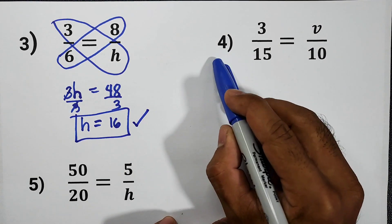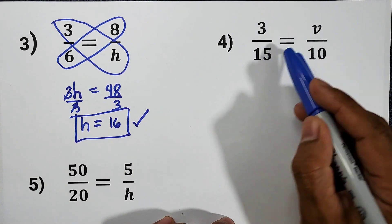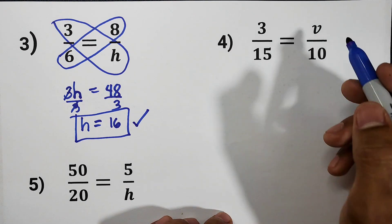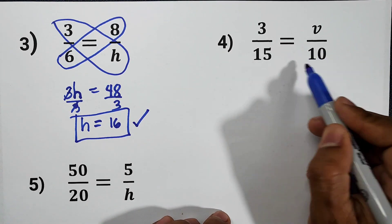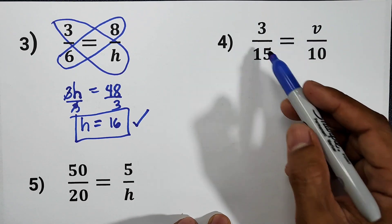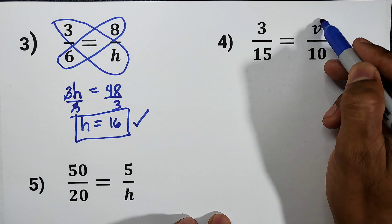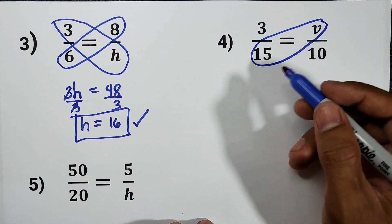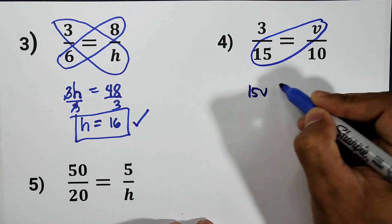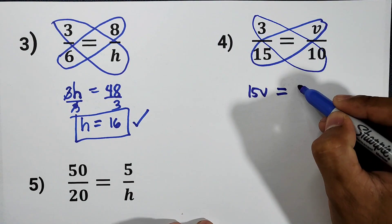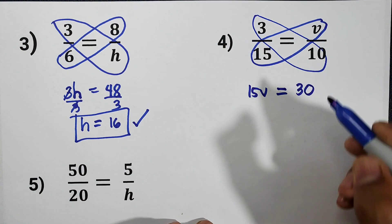For item number 4, 3 to 15 is equal to V to 10. We cannot easily find the relationship of 10 to 15 and V to 3, so we can use cross multiplication. 15 times V, that is 15V, is equal to 3 times 10, that is equal to 30.